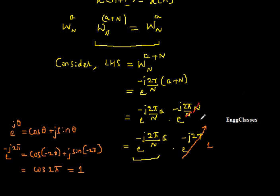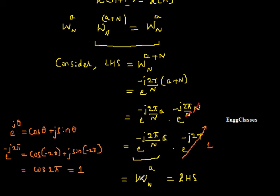Since e to the power (minus j 2π) equals 1, we are left with only Wn to the power a, which is exactly the RHS. Therefore, Wn to the power (a + N) = Wn to the power a for any integer a, and we have proved that the complex quantity twiddle factor is periodic.